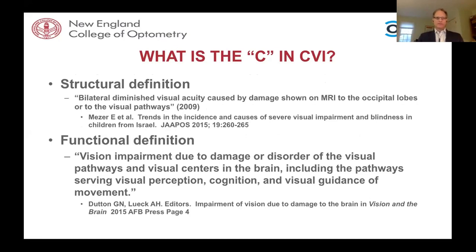The functional definition — vision impairment due to damage or disorder of the visual pathways and visual centers in the brain, including pathways serving visual perception, cognition, and visual guidance of movement — was put forth by Gordon Dutton, an esteemed pediatric ophthalmologist, and Amanda Lewick, a vision educator. They published a book in 2015 called 'Impairment of Vision Due to Damage to the Brain.' It is an excellent resource for identifying individuals with CVI and understanding habilitation strategies.